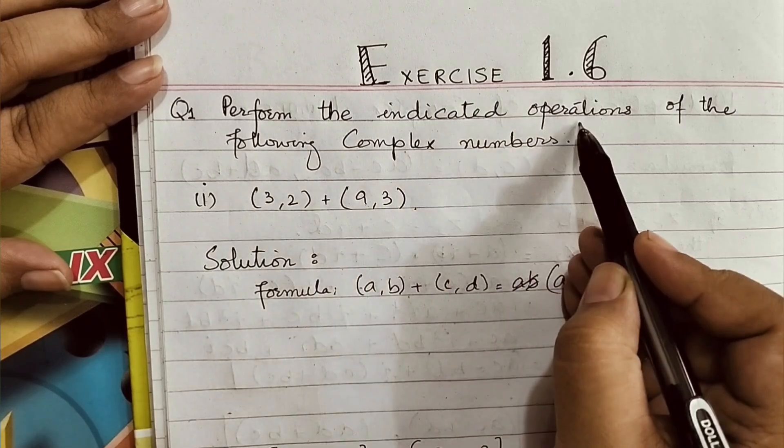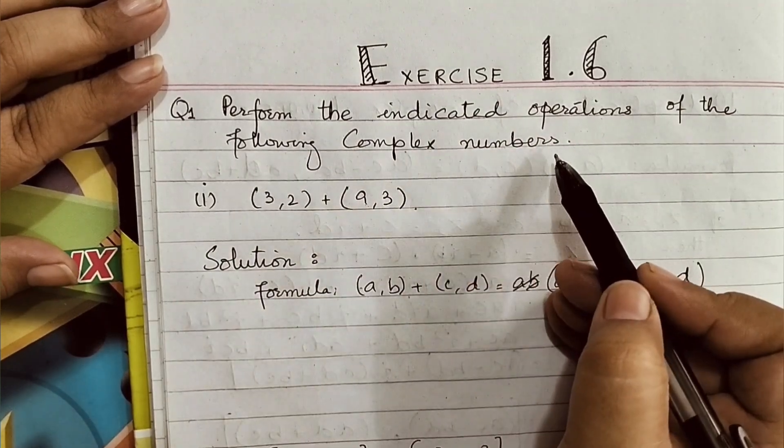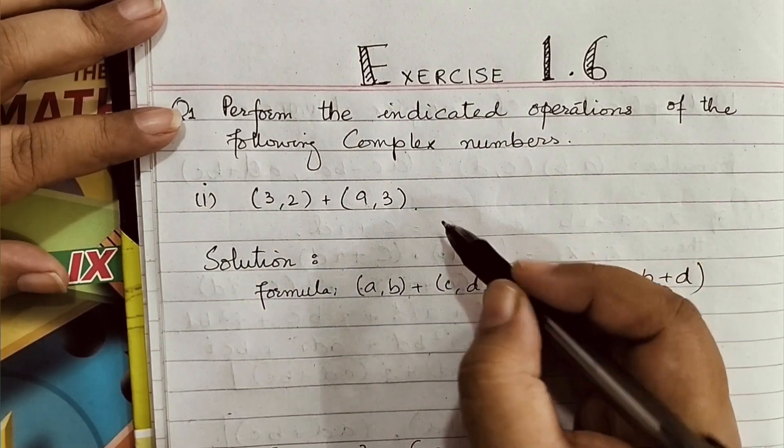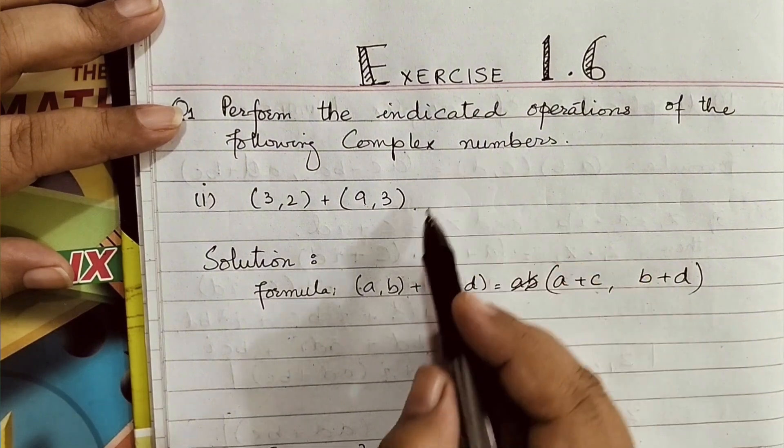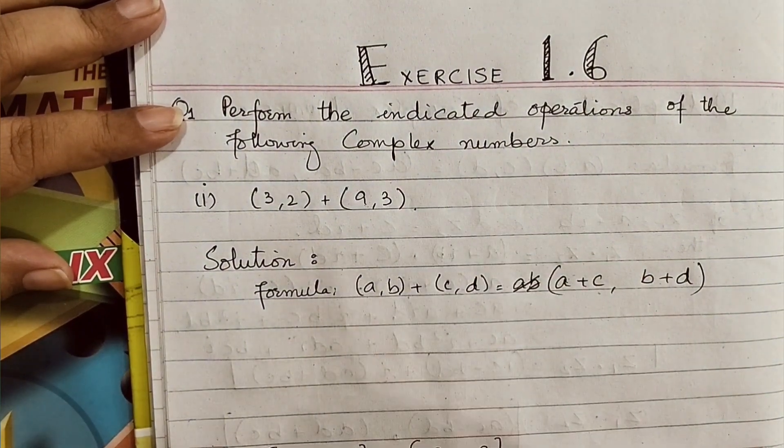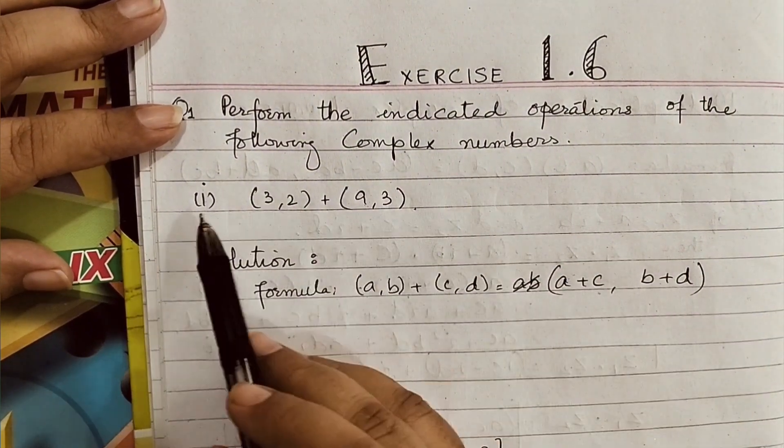Perform the indicated operations of the following complex numbers. The question is about operations between complex numbers, and we will solve using the identity. In the first part,